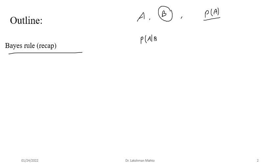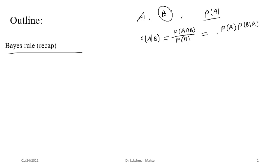How can you compute this updated probability? It comes directly from conditional probability: the probability of A given B equals the joint probability of A and B decomposed further. If you decompose the joint probability of A and B, it takes the form of probability of A times probability of B given A, divided by probability of B.